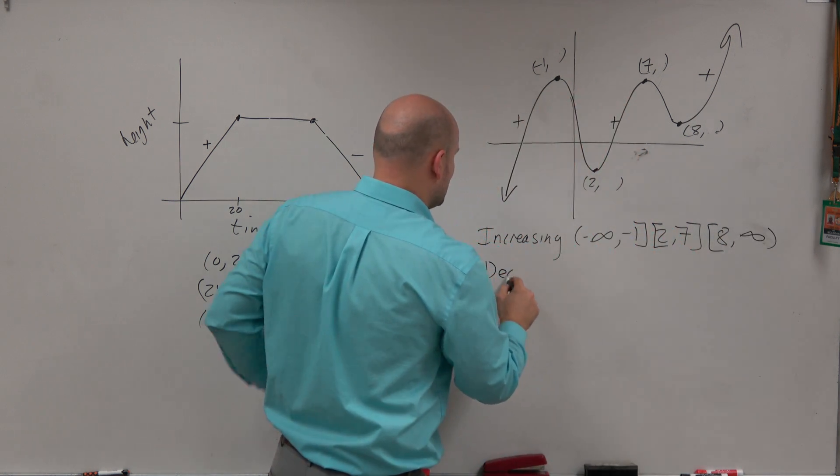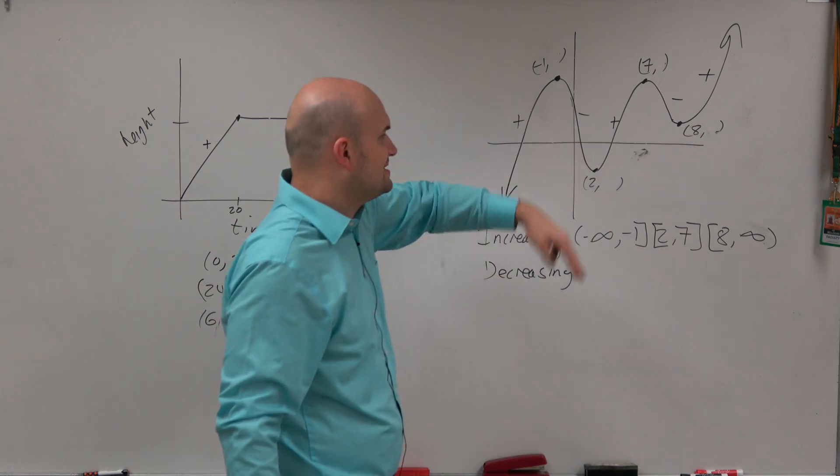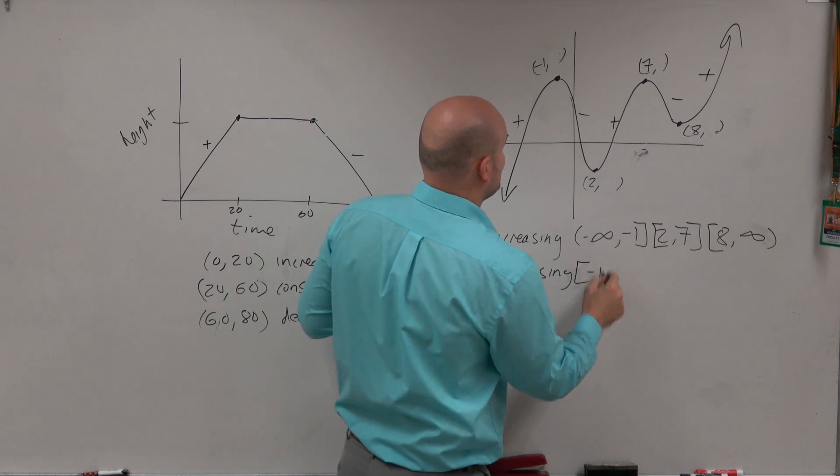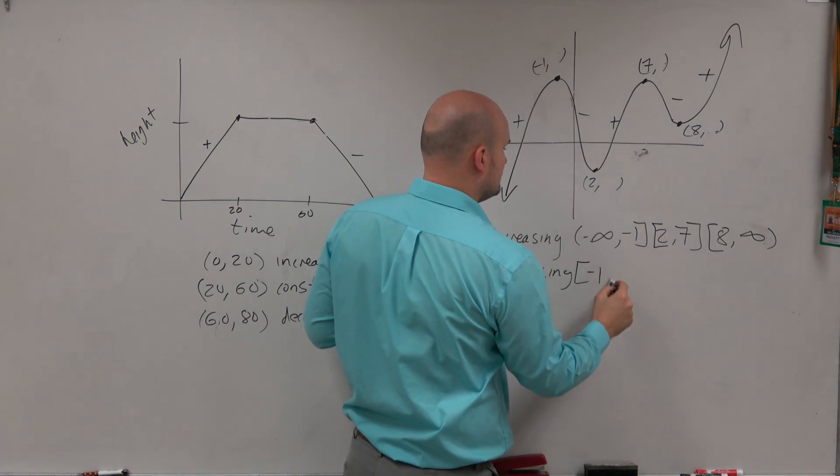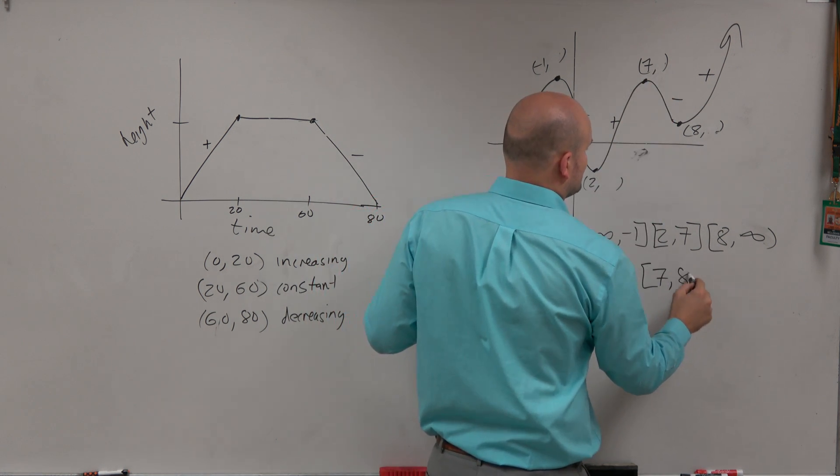Now the graph is decreasing where it's not increasing, obviously, where it has a negative slope, where it's going down. And you could say it's decreasing from the x value of negative 1 to 2, and it's decreasing from the x value of 7 to 8.